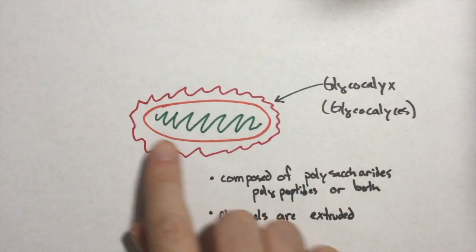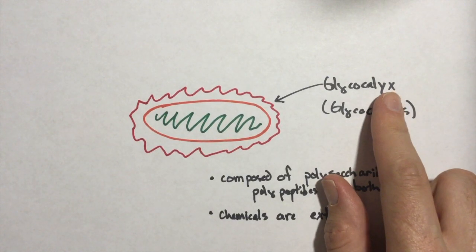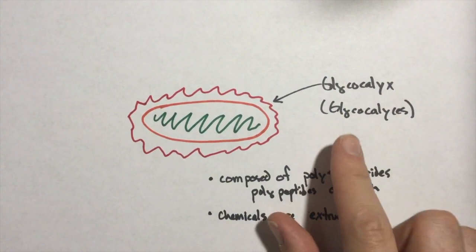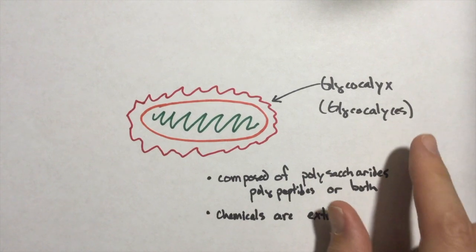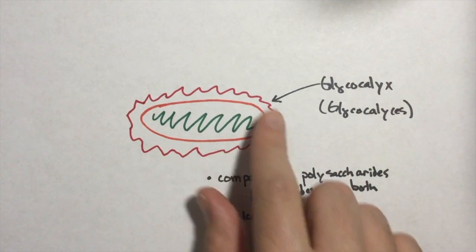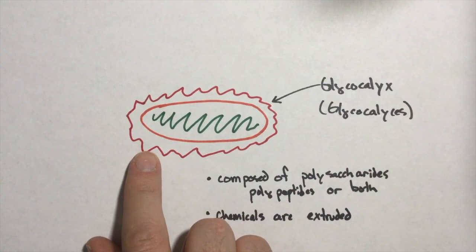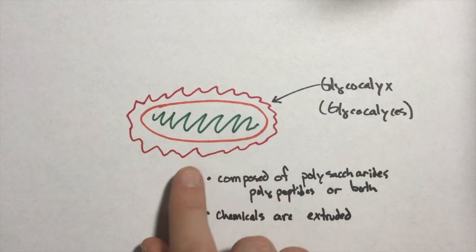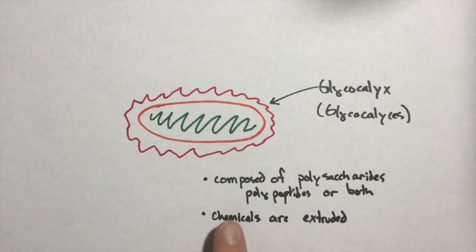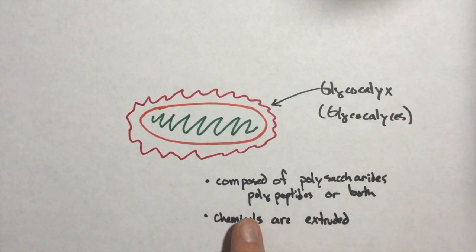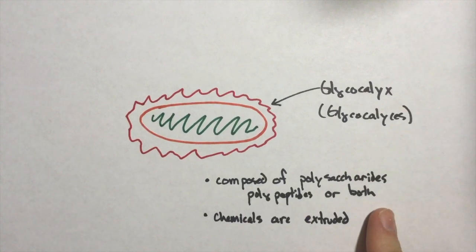So this is a bacterium and it's got what's called a glycocalyx. The plural of that would be glycocalyces. Glycocalyx is essentially just this sticky sweet layer around it. We call it sticky sweet because it's composed of sugars. It's composed of polysaccharides, polypeptides, or both actually.